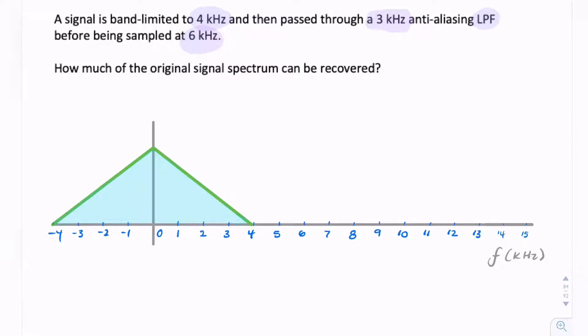6 kHz just happens to be twice the 3 kHz, and that's why we call it an anti-aliasing filter. We'll see that in a little bit more detail now. So the question is, how much of the original spectrum can we recover after sampling?